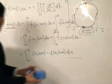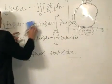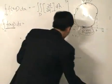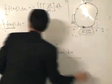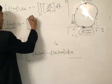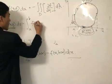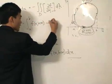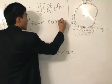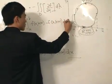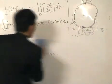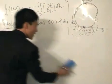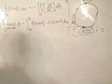So the left-hand side of the equation equals the integral from A to B of f(x, h(x)) minus f(x, k(x)), integrated with respect to x. That's the left-hand side. Now, the right-hand side — how are we going to handle that?